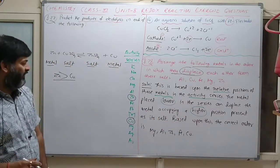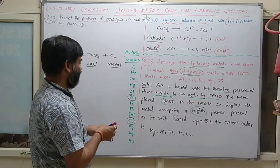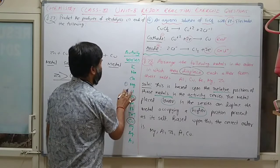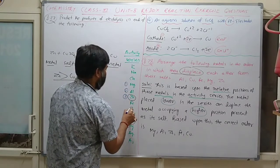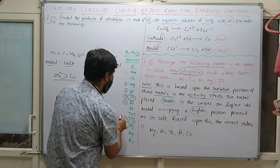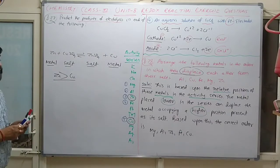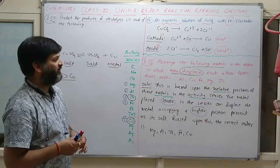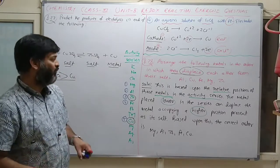The correct order for this question is: magnesium, then aluminum, then zinc, then iron, and then copper. You need to remember this activity series for displacement reactions.